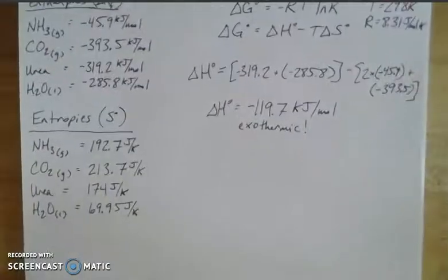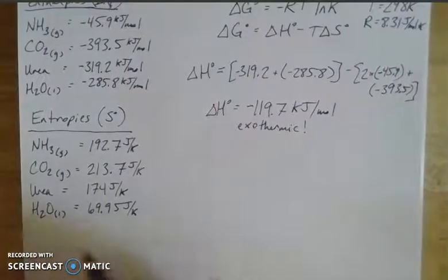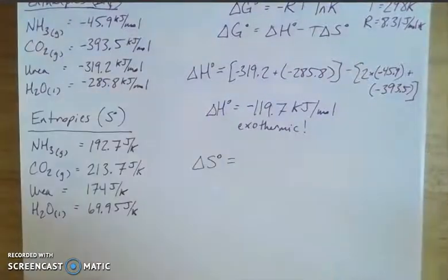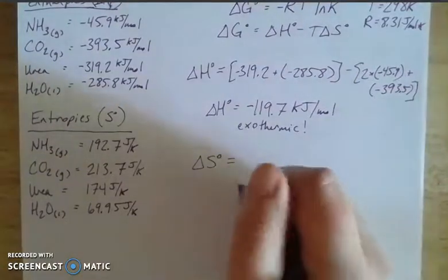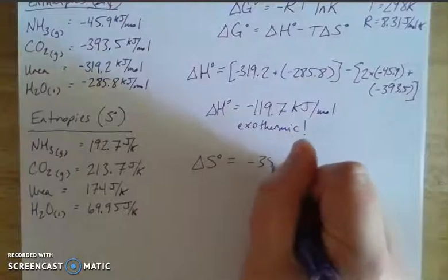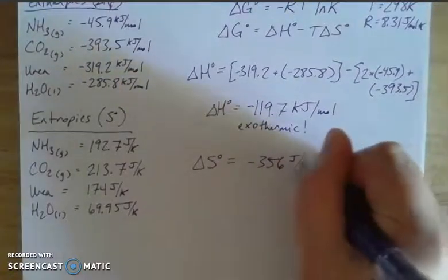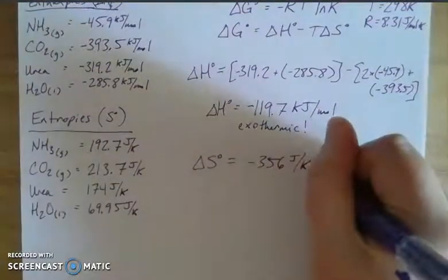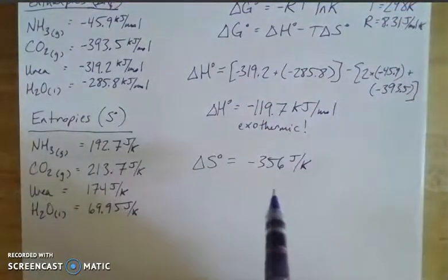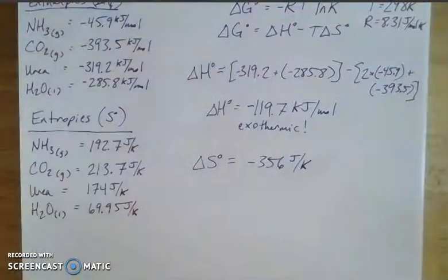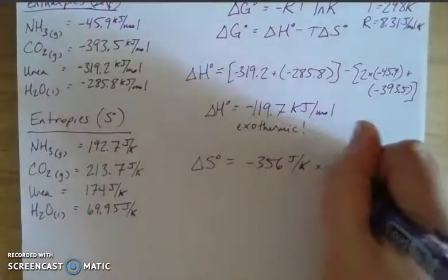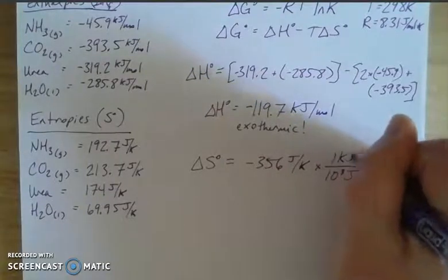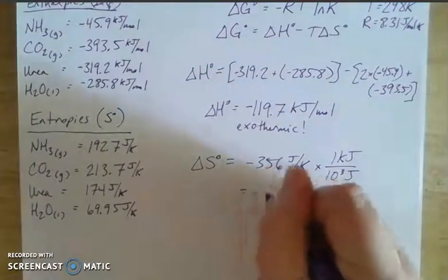And now I do the same thing with my entropies. So these are the entropies that I found. I do the same kind of operation. So let's go 356 joules per kelvin, joules per mole kelvin. And because I'm going to be putting them into my delta G, I'm going to convert this to kilojoules. So that gives me this, negative 0.356 kJ/K.